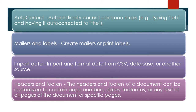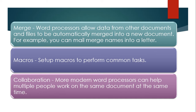Import Data: Import and format data from CSV, database, or other sources. Header and Footer: The header and footer of a document can be customized to contain page numbers, dates, footnotes, or any text on all pages or specific pages. Merge: Word processors allow data from another document or file to be automatically merged into a new document — for example, mail merging names into a letter. Macros: Set up macros to perform common tasks. Collaboration: More modern word processors can help multiple people work on the same document at the same time.